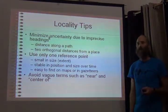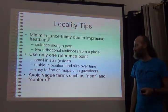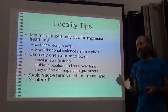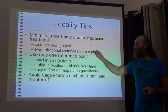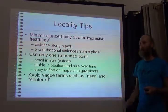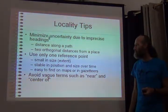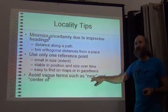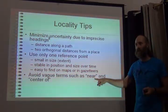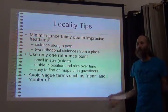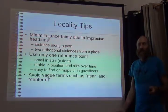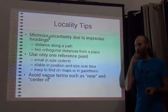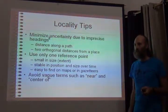Finally, the reference point should be something easy to find — if you can go on Google Maps and find it there, that's a good measure. To summarize: the description should not introduce unnecessary uncertainty; directions should be very specific, reference points small and stable over time. Some descriptions use terms such as 'the center of' and 'near' — those are difficult to interpret. What does it mean to be 'near' zigzag point? We have rules for how to interpret that, but if you avoid such terms, you avoid having to make those interpretations.